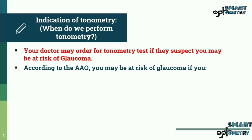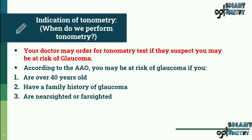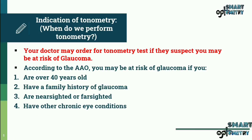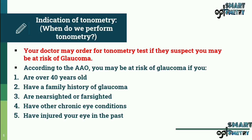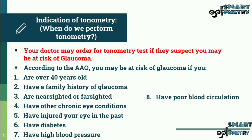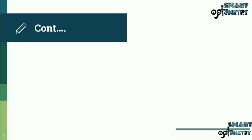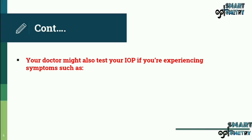may be at risk of glaucoma if you are over 40 years of age, have a family history of glaucoma, are nearsighted or farsighted, have other chronic eye conditions, have injured your eye in the past, have diabetes, or have high blood pressure.